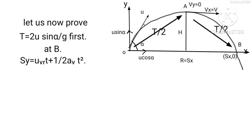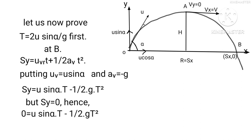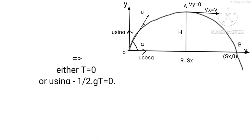At B, Sy equals Uy·T plus (1/2)·a·T². Putting Uy equals U sin α and a equals minus g, we get Sy equals U sin α · T minus (1/2)·g·T². But Sy equals 0. Hence, 0 equals U sin α · T minus (1/2)·g·T². This implies T·(U sin α minus (1/2)·g·T) equals 0. Either T equals 0 or U sin α minus (1/2)·g·T equals 0. Therefore T equals 2U sin α upon g.